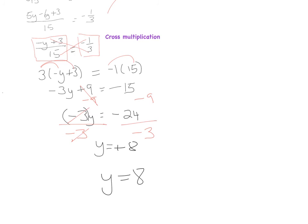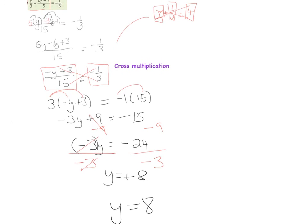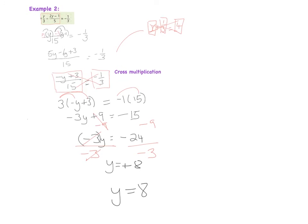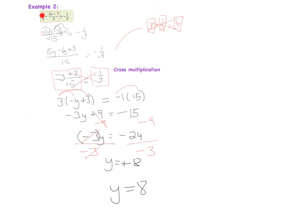On the right, minus 24 divided by minus 3: a minus divided by a minus gives a plus, and 3 goes into 24 eight times, so y equals 8. To summarise: simplify the left side to one expression, cross multiply to remove fractions, expand brackets, then balance to find y.